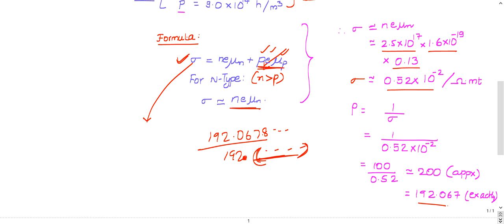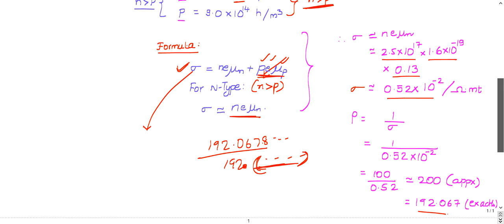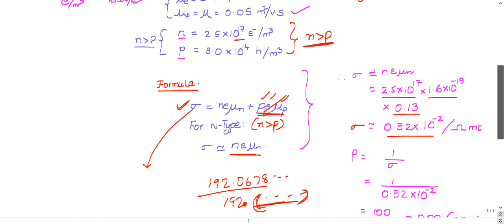You'll get 192 point something different, like 192.067 - doesn't matter, it should be near 192. But in exams like ISRO, time is a crucial factor, so try to neglect that small term to save time.